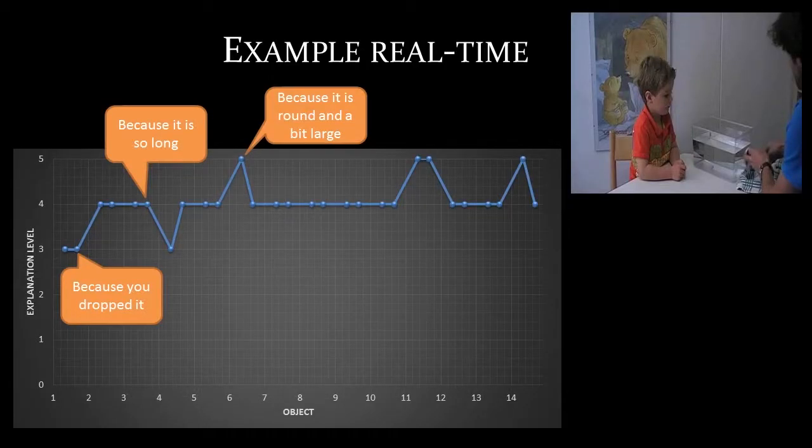This is an example from one of my studies conducted in real-time. A little boy is doing a floating and sinking task with an adult — a triangle between the adult, the child, and the task. The adult gives him 14 different objects one by one. Each time the child is asked to predict what will happen — will it float or will it sink? — and to give an explanation. Then he returns the object to the adult, who drops it in the water tank, and the child is asked to explain again. So there are two explanations per object and 14 objects total. We coded the complexity of those explanations.